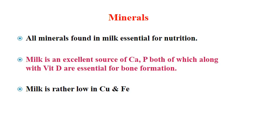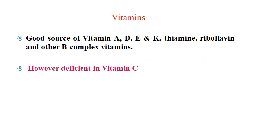About minerals: together they are called ash, around 0.7 to 0.8 percent in general. All minerals essential for nutrition are found in milk. Milk is an excellent source of calcium, phosphorus, and potassium, which along with vitamin D are essential for bone formation. Milk is a little less rich in copper and iron. Regarding vitamins, milk is a very good source of fat-soluble vitamins A, D, E, and K, present in milk fat, and a good source of B vitamins including thiamine, riboflavin, B12, and most B-complex vitamins. However, milk is a poor source and is deficient in vitamin C.